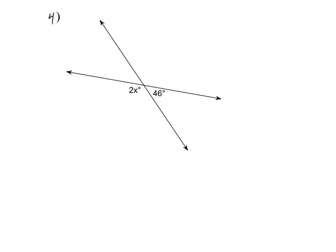So linear pairs are always supplementary angles. So that means that 2x plus 46 equals 180. I'm going to subtract 46 on both sides. So 2x equals 134. And I'm just going to divide by 2. So x equals 67 degrees.